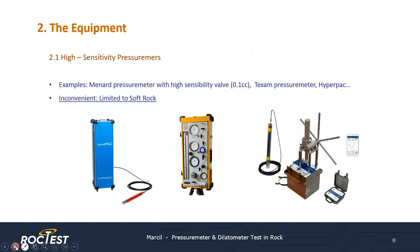Soil pressure meters can be used in rock provided that they have sufficient sensitivity and loading capacities. For instance, already in the 1960s, Menard pressure meters were used in rock with good results. However, these devices are not perfectly adapted to tests in rock. Their sensitivity and loading capacity are often not sufficient, their parasitic deformation is often too important, and they are often hardly usable in deep and dry boreholes. Therefore, they can only be considered for use in very soft rock.